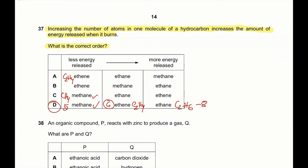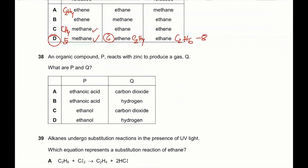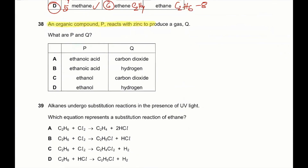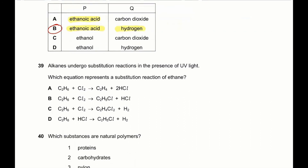Question 38: an organic compound P reacts with zinc to produce a gas Q. What are P and Q? If an organic compound reacts with a metal such as zinc, it has to be an organic acid. So P is ethanoic acid and when it reacts with zinc it produces hydrogen gas. So 38 B is the correct answer.